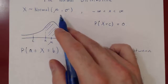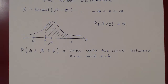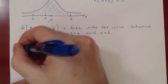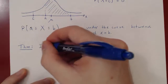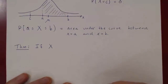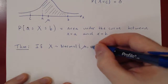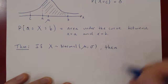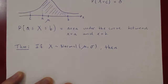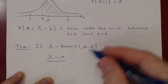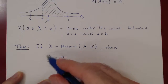If x is a normal random variable with a mean of mu and a deviation of sigma, we can transform x to become a very special normal random variable. We form a new random variable: take x, subtract from x its mean, and divide the whole thing by the standard deviation. This we will always call z.